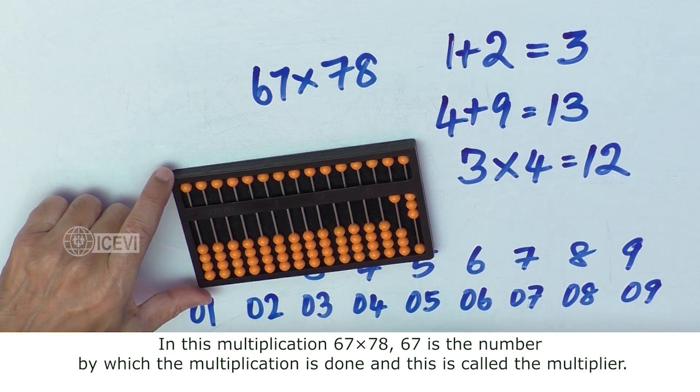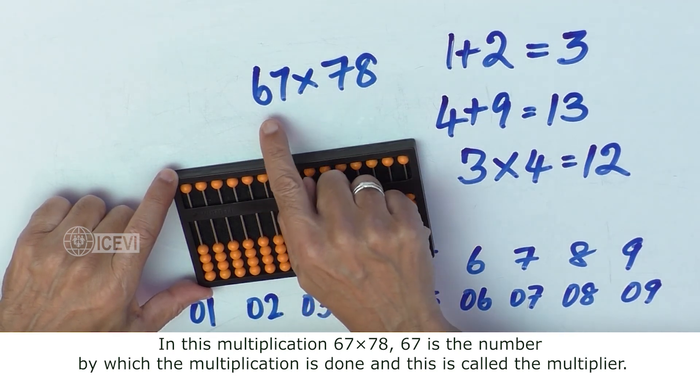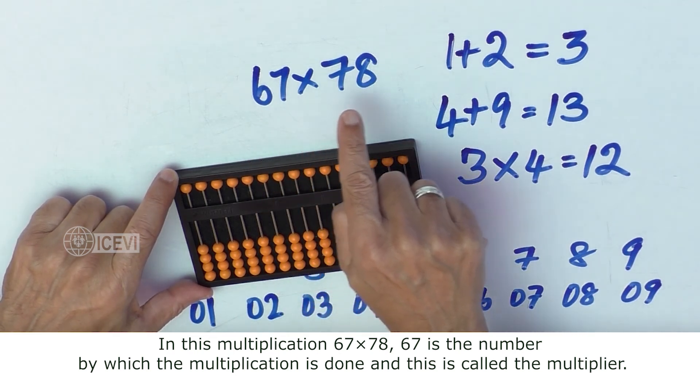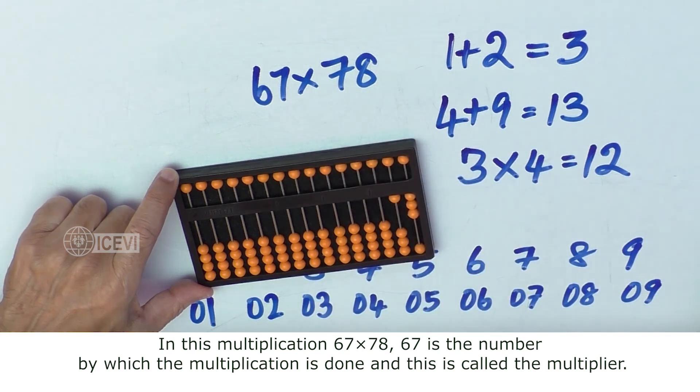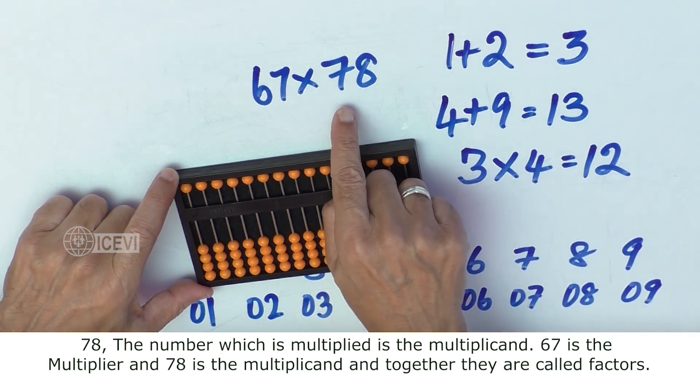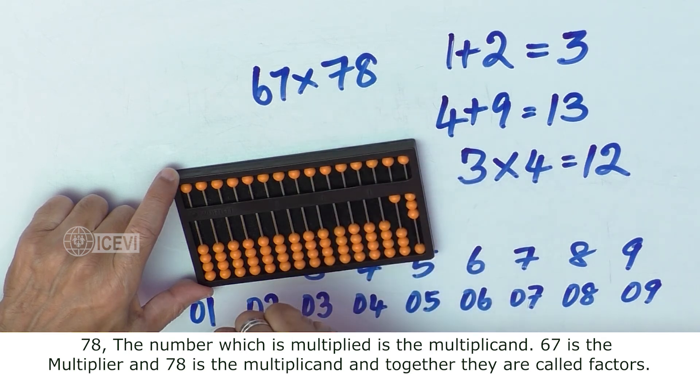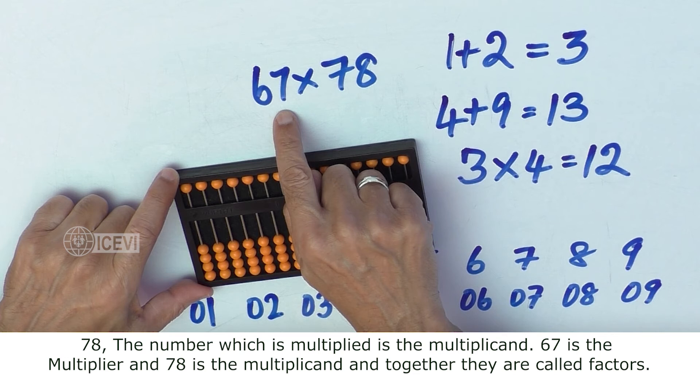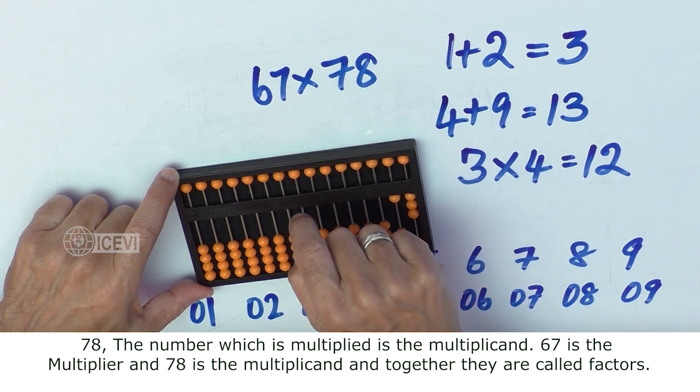In this problem, 67 is the number by which the multiplication is done and this is called Multiplier. 78, the number which is multiplied is called Multiplicand. 67 is the Multiplier and 78 is the Multiplicand.